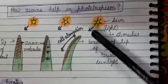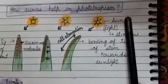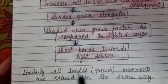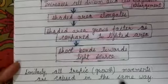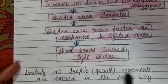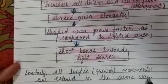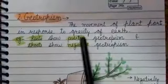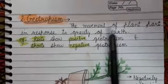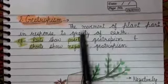In this way, auxins help in phototropism. Similarly, all tropic movements that we will study are caused in the same way — all tropic movements are caused due to the effect of auxins. Next is geotropism: the movement of a plant part in response to gravity of the earth. The stimulus is gravity of the earth.